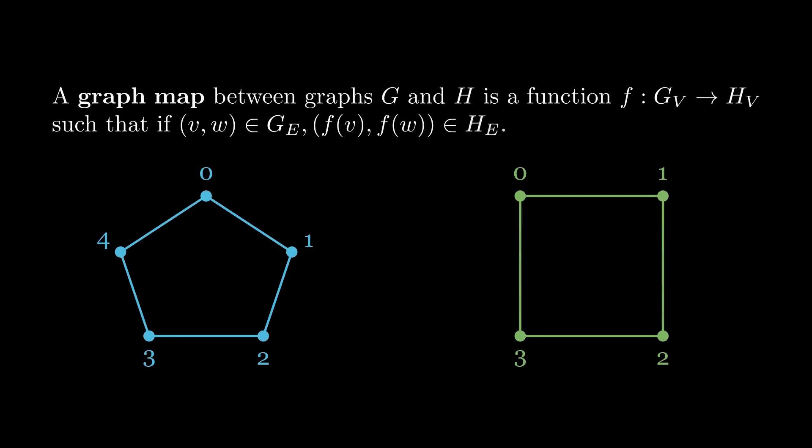So whenever V, W is in the edge set of G, then F of V, F of W is in the edge set of H. And what this means is that it sends edges to edges, but it can also contract an edge to a vertex by sending that edge to the unique loop that is on every vertex.